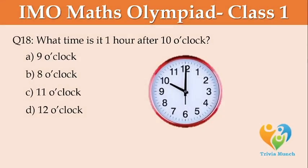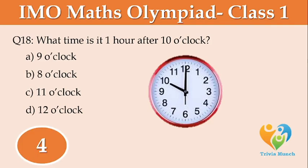What time is it 1 hour after 10 o'clock? Option A: 9 o'clock, Option B: 8 o'clock, Option C: 11 o'clock, Option D: 12 o'clock.